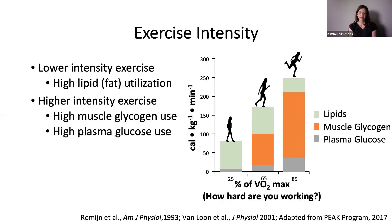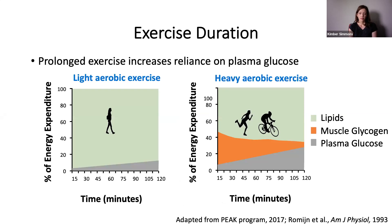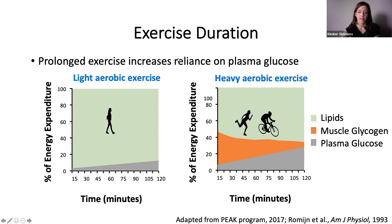You can see that the reliance on plasma glucose increases as you increase your intensity level, as does the breakdown of glucose stores from your muscle. Similarly, if you look at exercise duration, whether you're doing light aerobic exercise and walking or heavy aerobic exercise, over time you're using more plasma glucose or blood sugar. When exercising longer at higher intensity, you also decrease reliance on muscle glycogen and rely more on plasma glucose.